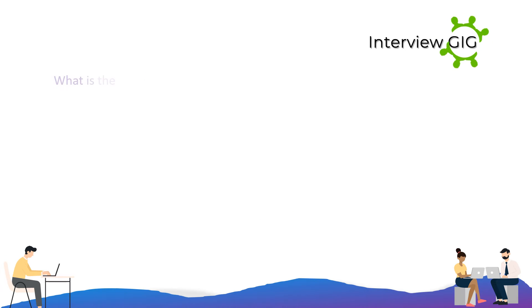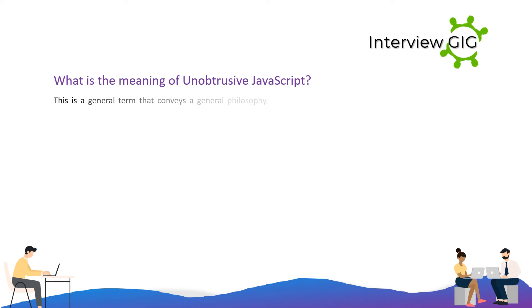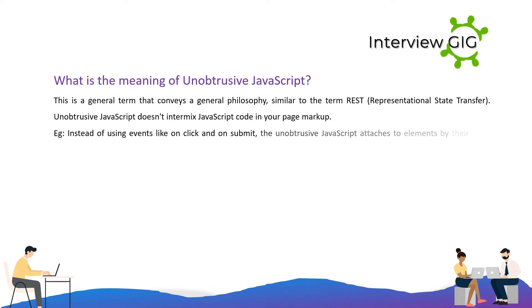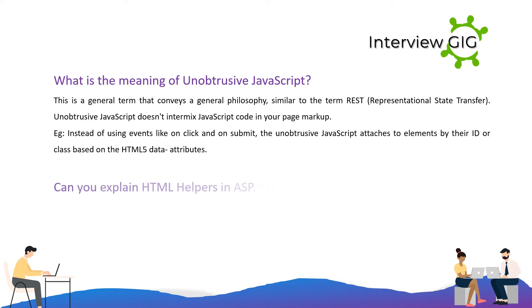What is the meaning of unobtrusive JavaScript? This is a general term that conveys a general philosophy, similar to the term REST (Representational State Transfer). Unobtrusive JavaScript doesn't intermix JavaScript code in your page markup. For example, instead of using events like OnClick and OnSubmit, unobtrusive JavaScript attaches to elements by their ID or class based on HTML5 data attributes.